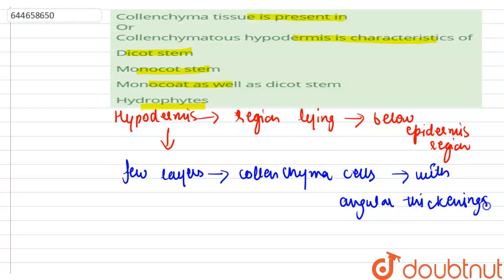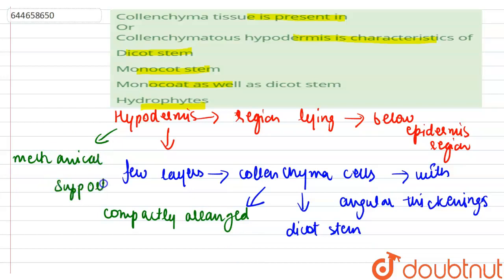The colenchyma cells are compactly arranged without intercellular spaces and the hypodermis provides mechanical support and additional protection to the dicot stem. So the correct option for this question is dicot stem.